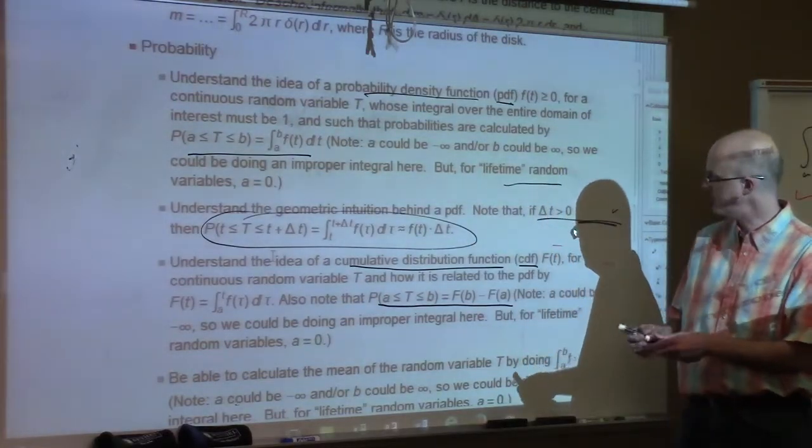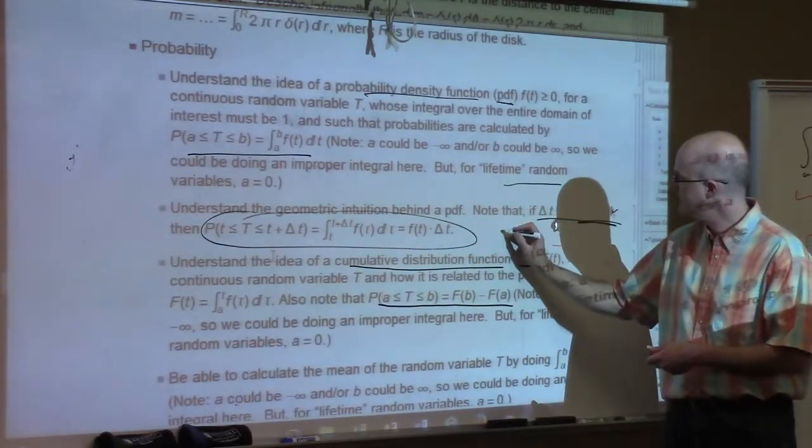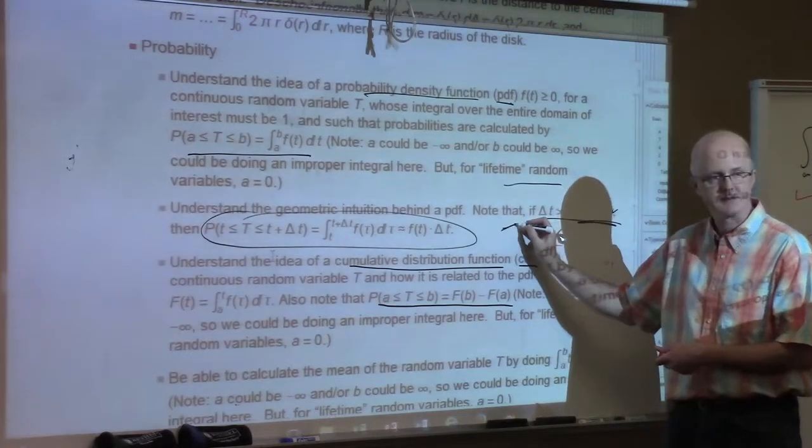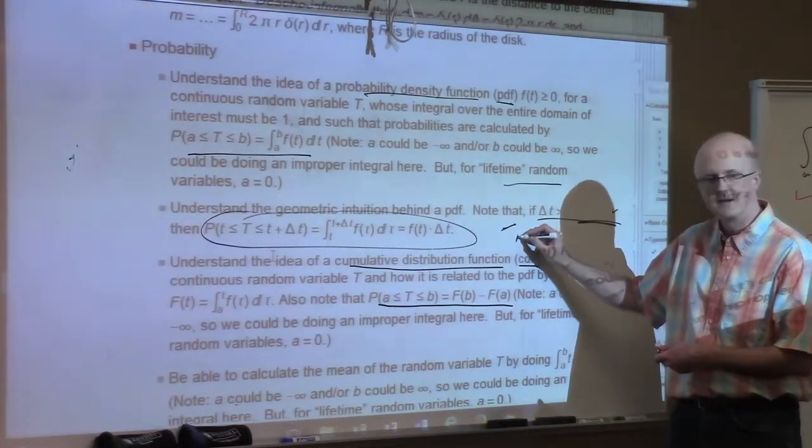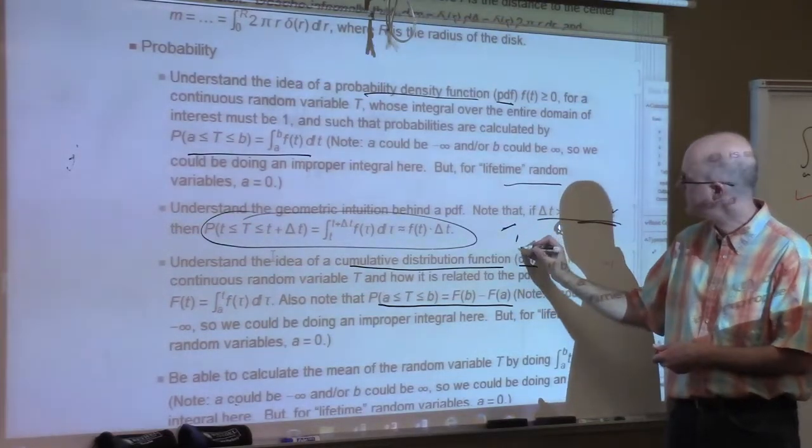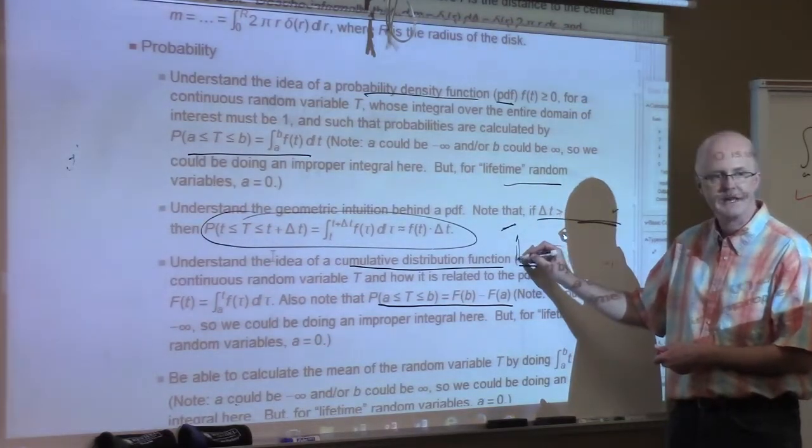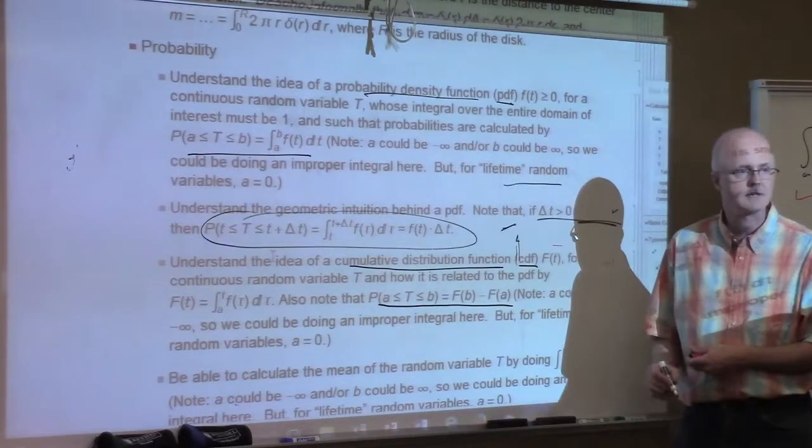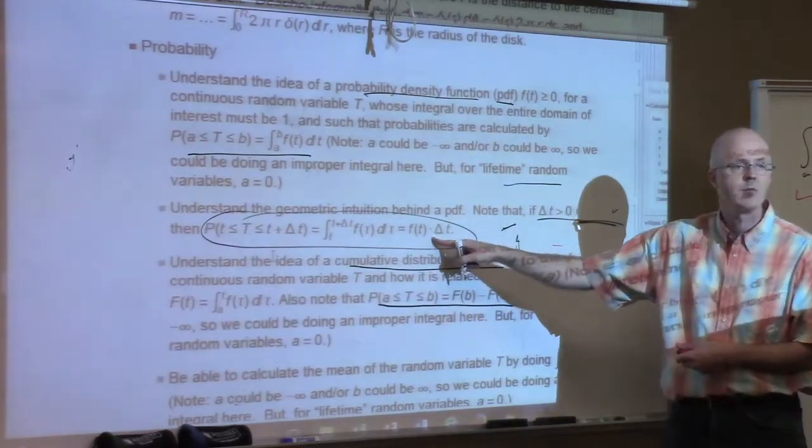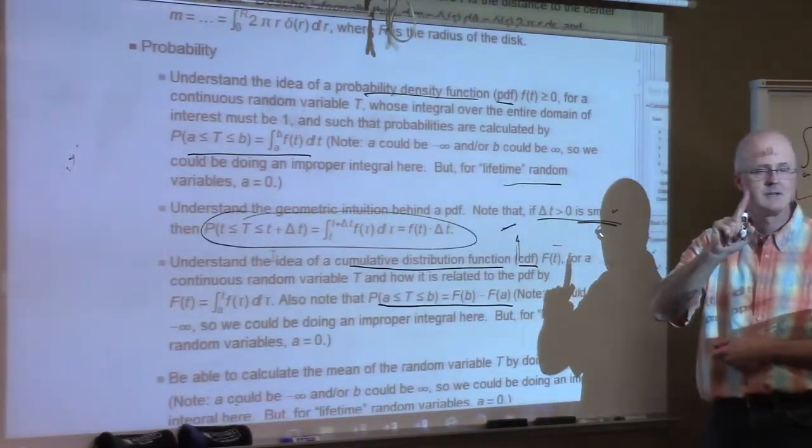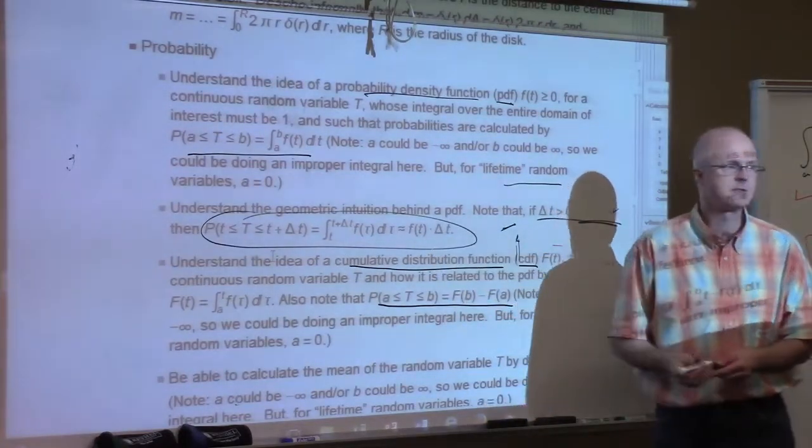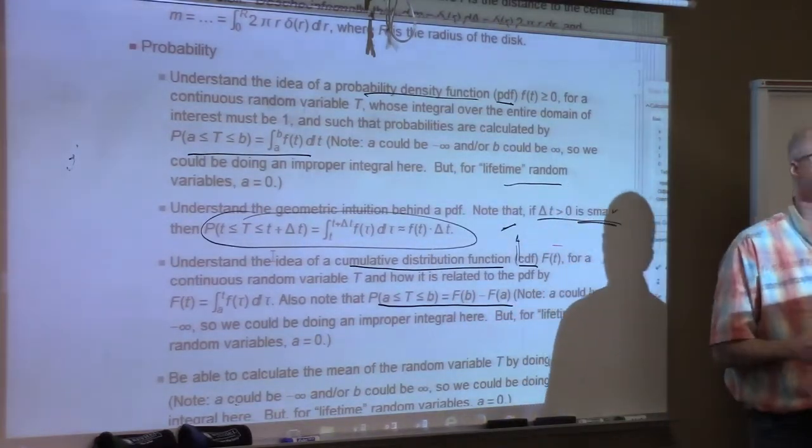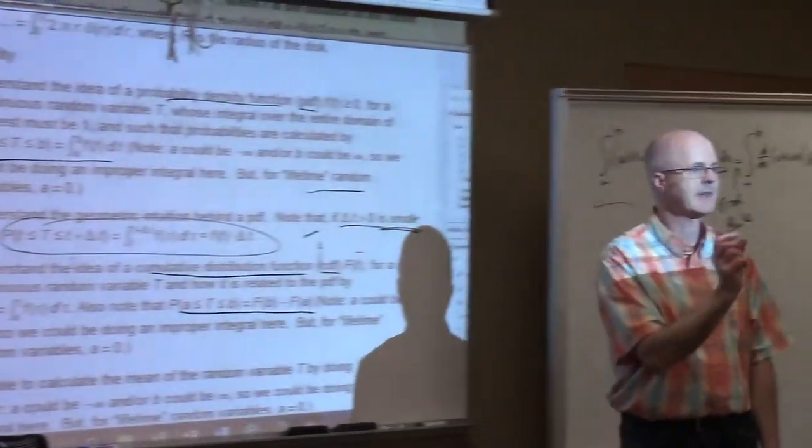You can just take a function value of the PDF times the time interval to get your approximation. Because over such a small time interval, the PDF is going to be almost constant. If it's steep, it's short, if delta T is small. And so you can approximate the area under the PDF as an area of a rectangle, essentially. It's like a left-hand sum with one rectangle. So the height of the PDF over small time intervals is proportional to the chance that you're going to die during that small time interval.